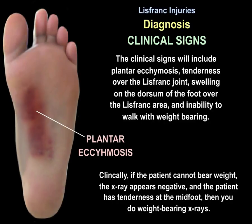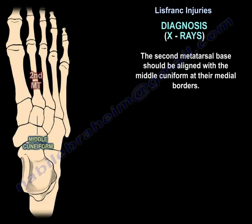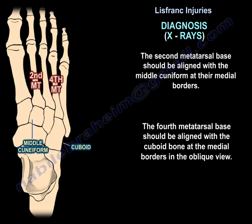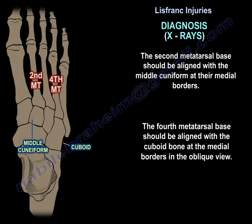If the patient cannot bear weight, the x-ray appears negative, and the patient has tenderness at the midfoot, then you perform weight-bearing x-rays. On x-ray, the second metatarsal base should be aligned with the middle cuneiform at the medial borders, and the fourth metatarsal base should be aligned with the cuboid bone at the medial borders on the oblique view.